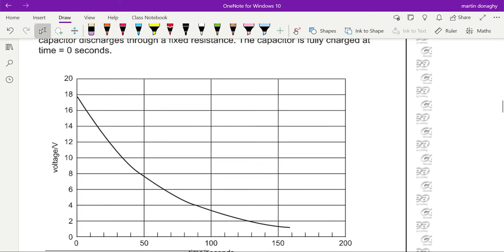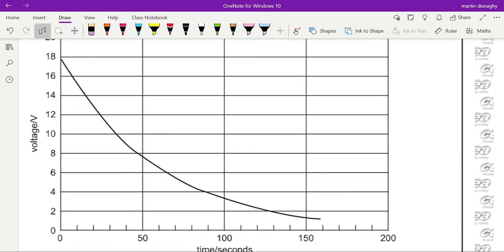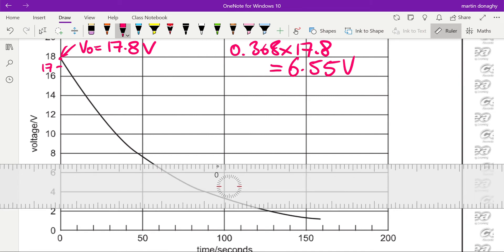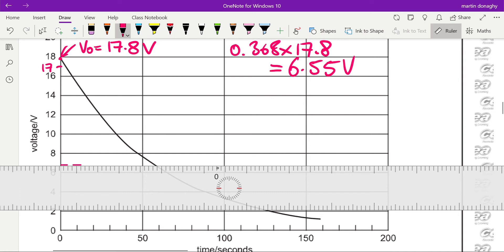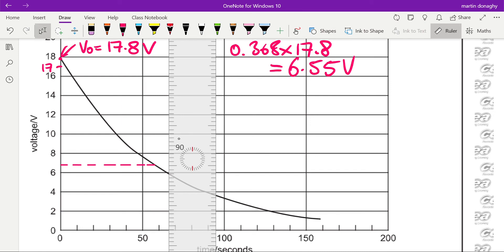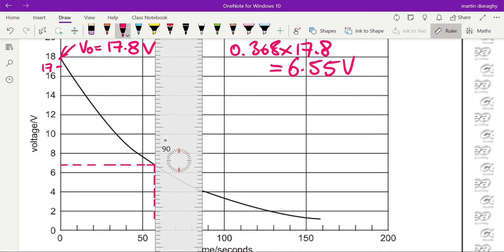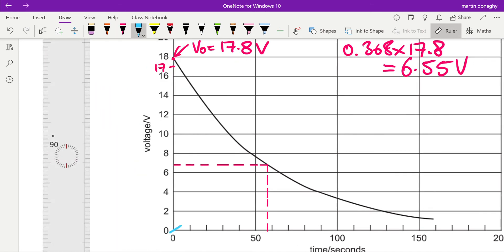Now this is not a nice graph. I don't know if the actual paper would have had a nicer grid behind it, but let's try and work with what we've got. I would say v naught is probably about 17.8 volts, so 0.368 times 17.8 gives us - I'm using the full value for 1 over e for accuracy - 6.55 volts if you round it. So what I want to do is I want to go to 6.5, so there's about 7, there's about 6.55. Draw a line across, draw a line down.